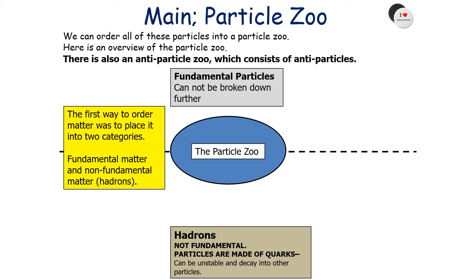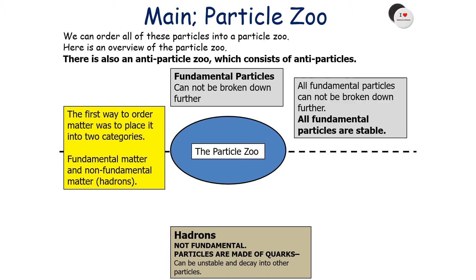There's also an antiparticle zoo consisting of antiparticles, but in this lesson we're only going to consider the particle zoo. The first way to order matter was to place it into one of two categories: fundamental particles, and non-fundamental matter which we term hadrons. Fundamental particles cannot be broken down any further, so our fundamental particles are stable, but hadrons are not fundamental — they can be broken down further, as they are particles made from quarks.